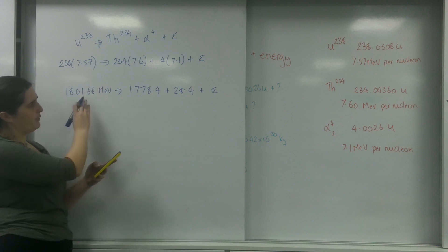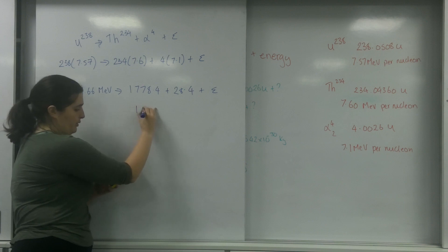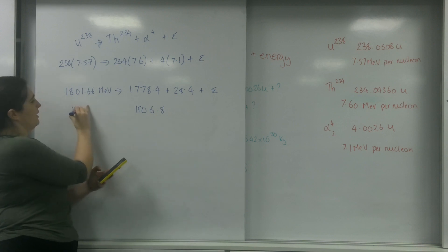I apologize for that. 238 times 7.57... adding that side together, I have 1778.4 plus 28.4 is 1806.8, and this side is 1801.66 MeV.